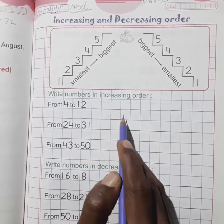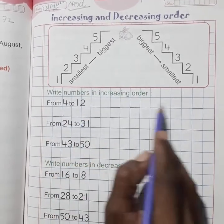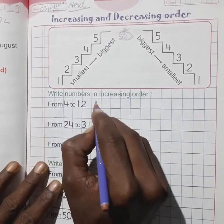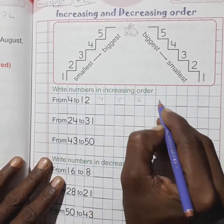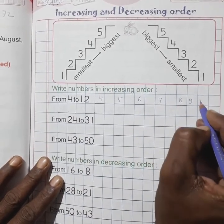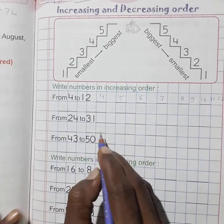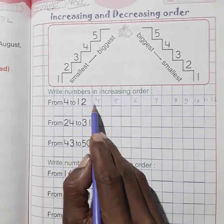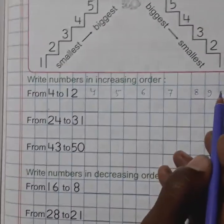Student, here from 4 to 12, so write serially 4 to 12, just like 4, 5, 6, 7, 8, 9, 10, 11, and 12. From 4 to 12 means 4, 5, 6, 7, 8, 9, 10, 11, 12.